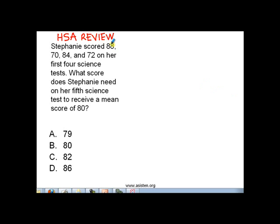We know that Stephanie scored 88, 70, 84, and 72 on her first four science tests. Since she has these four tests, most likely Stephanie already computed her average or the arithmetic mean. When you say mean, it's just the arithmetic mean or the average. How do we get the average? We simply add all the numbers, in this case all the science test scores, and divide by how many scores there are.